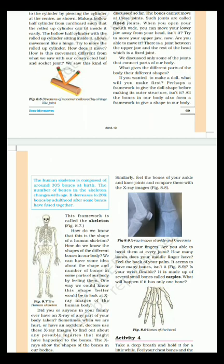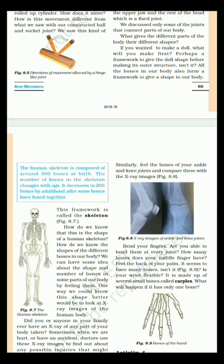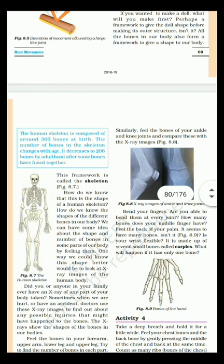The human skeleton is composed of around 305 bones at birth. The number of bones in the skeleton changes with age. It decreases to 206 bones by adulthood after some bones have fused together. And a few bones get fused together and it later reduces to 206 bones by adulthood. The framework is called the skeleton. All the bones in our body also form a framework, right? To give a shape to our body. This framework is called skeleton.